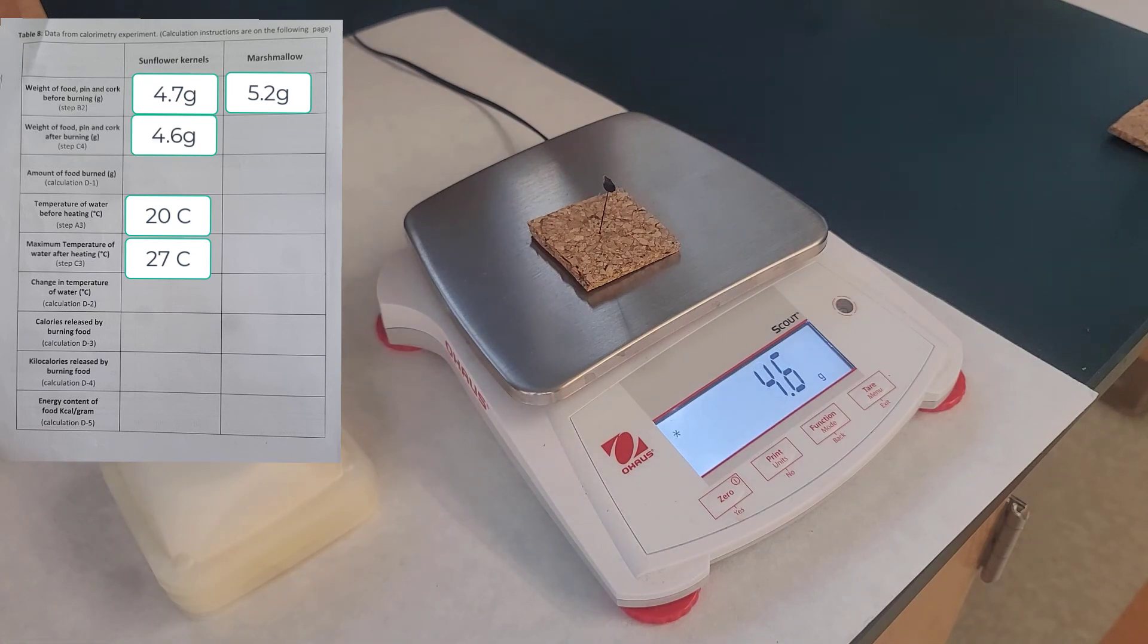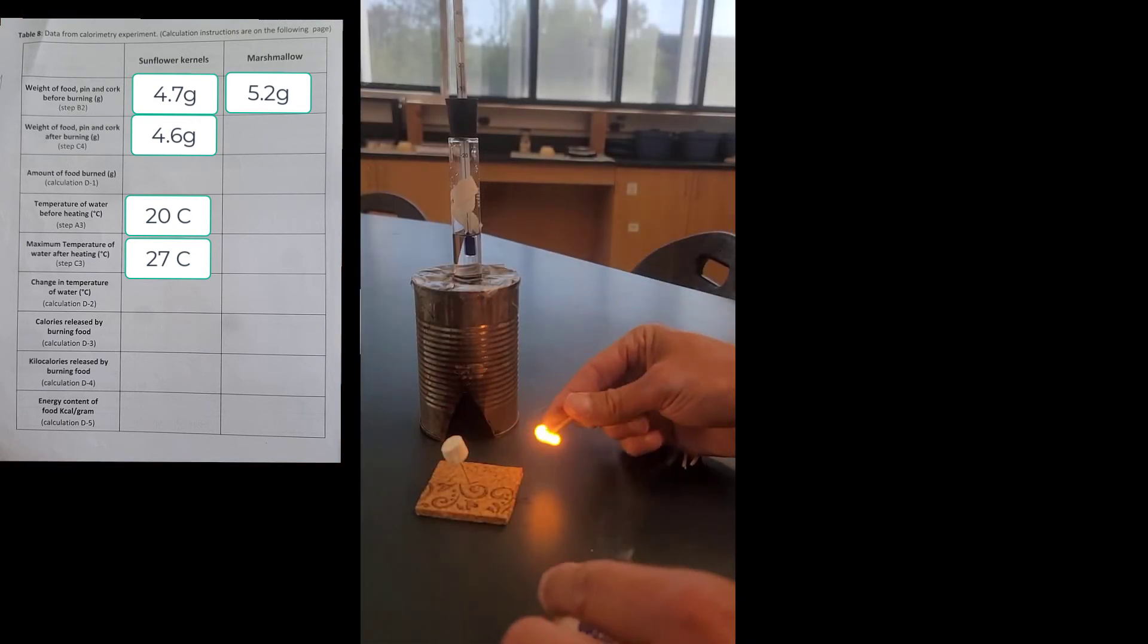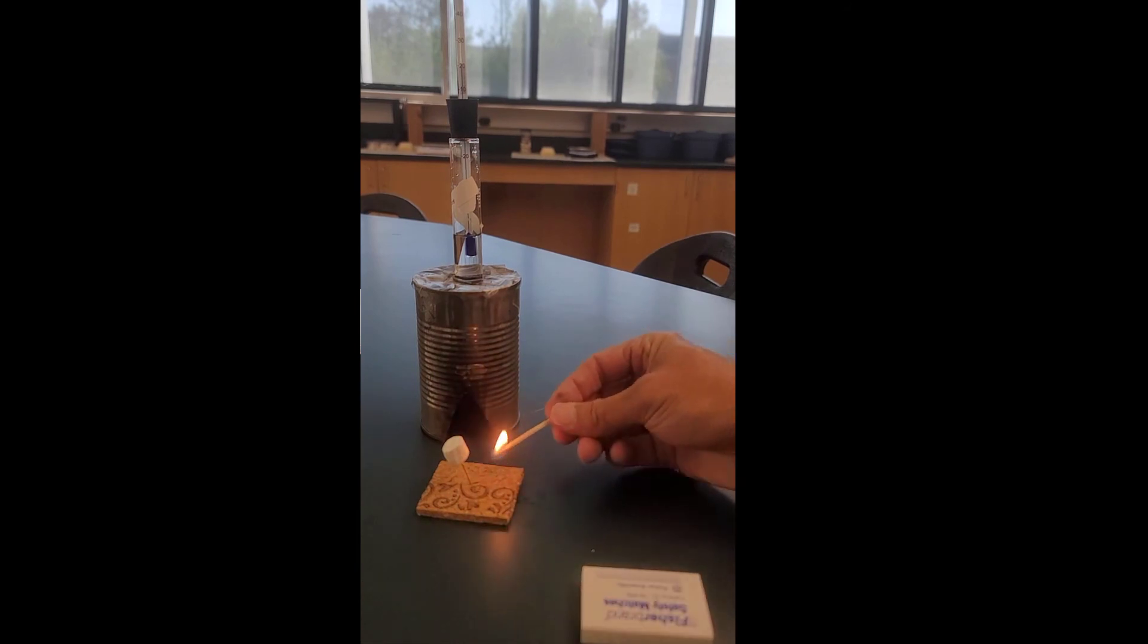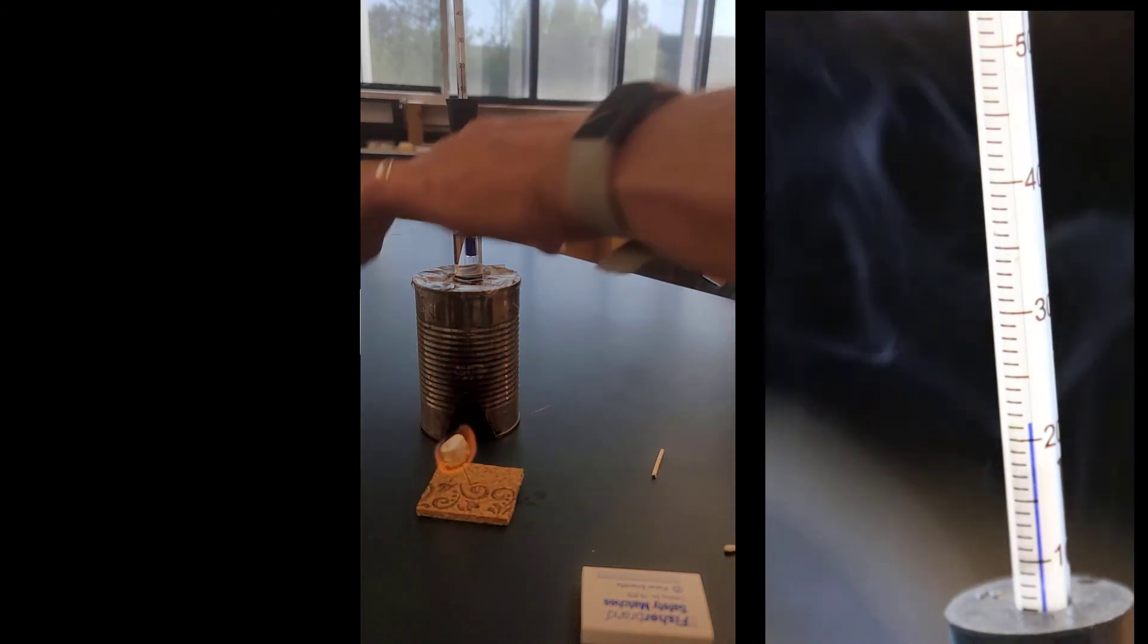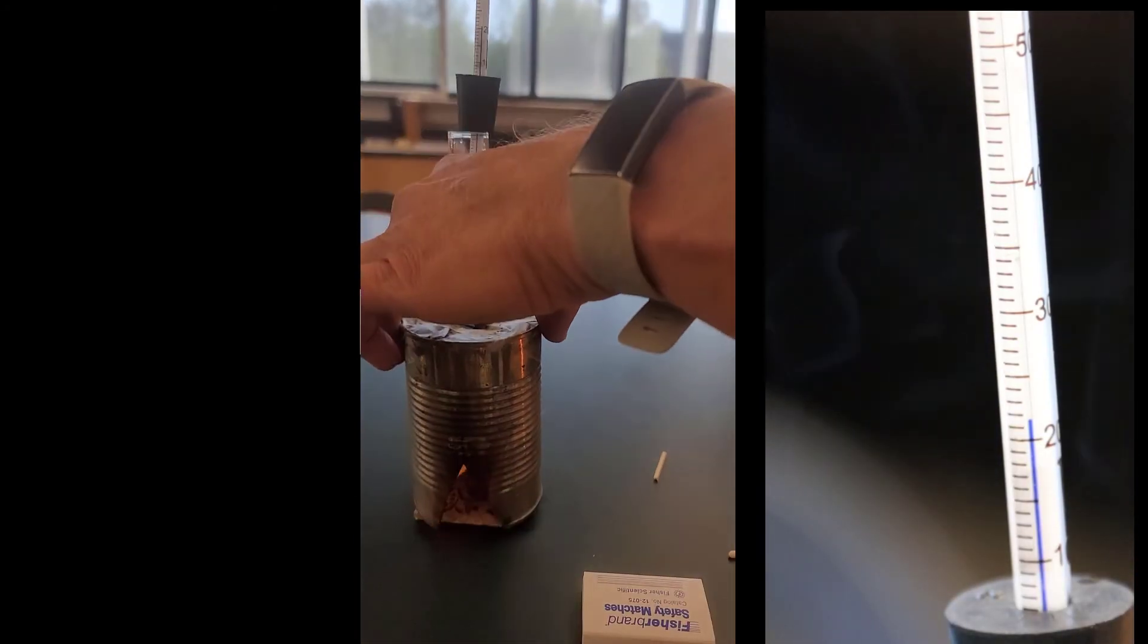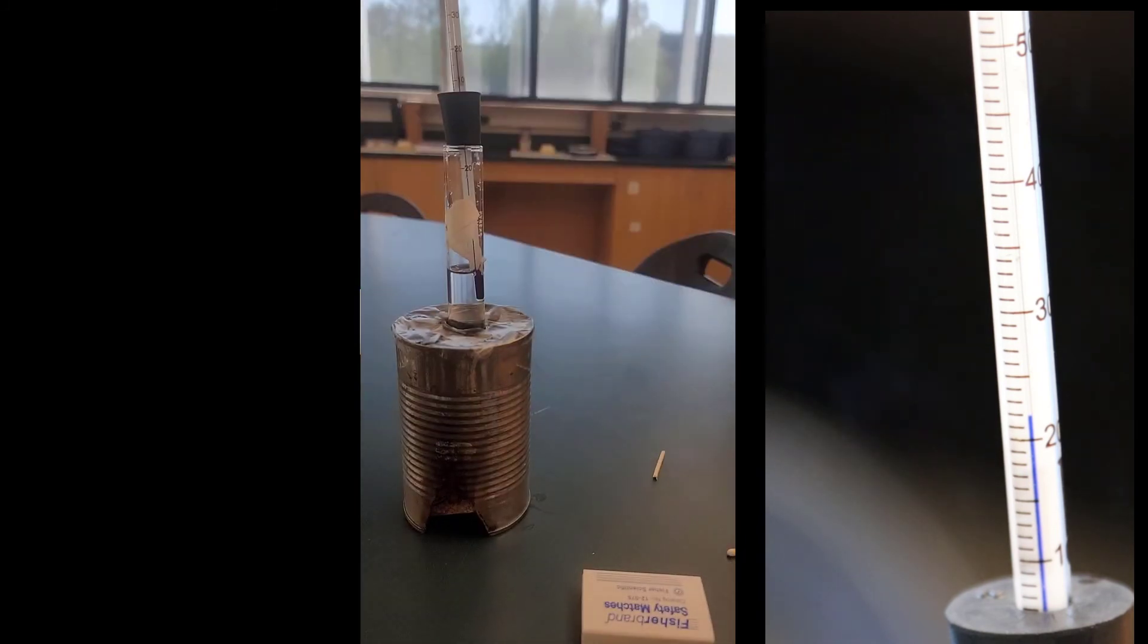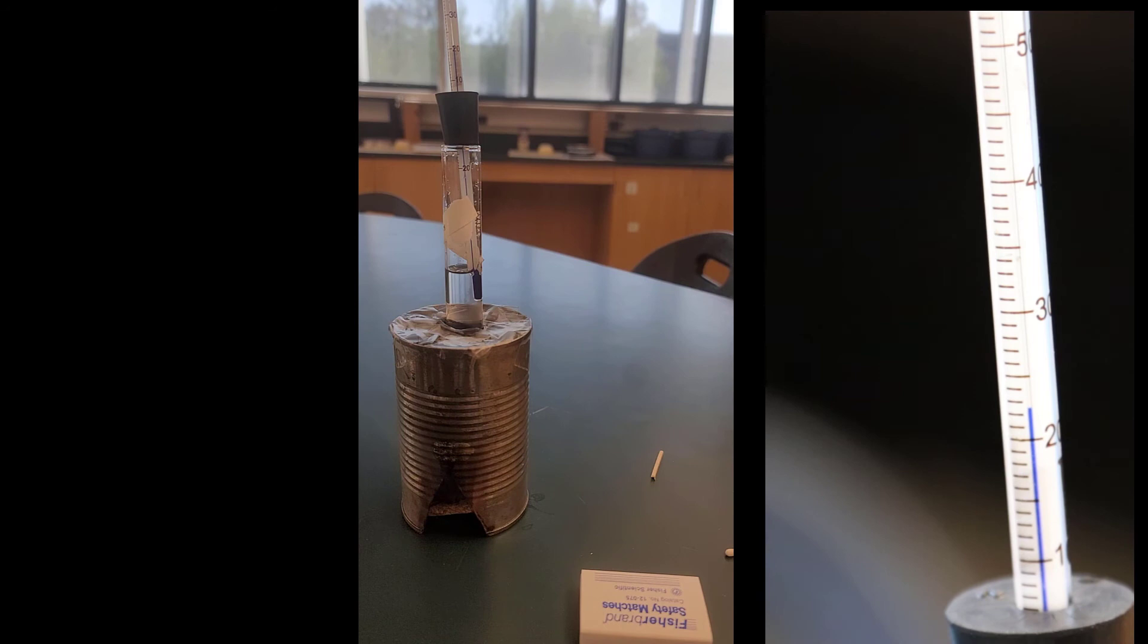We repeat the experiment using the marshmallow. What you're going to do now is take your marshmallow that's on your pin, set up your calorimeter, light your marshmallow on fire, get it burning, and then put the can on top. You do the same thing—record how high the temperature goes at the end of the experiment.